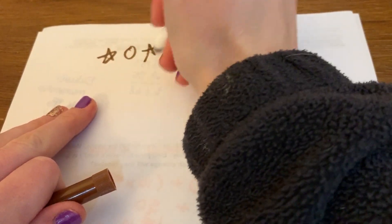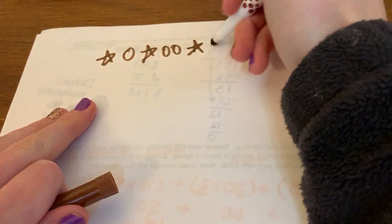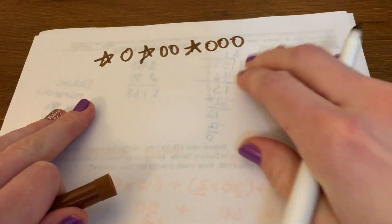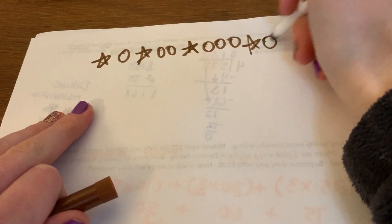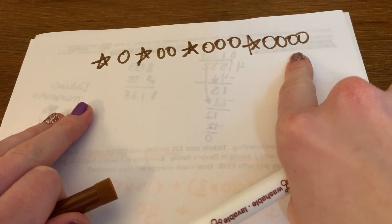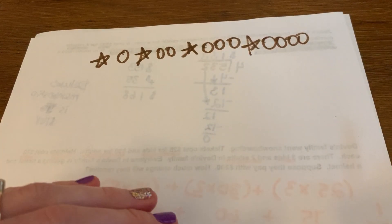so for example, we had star, circle, star, circle, circle, star, circle, circle, circle. And then the next one would be star, four circles. A growing pattern, that's something that could change.